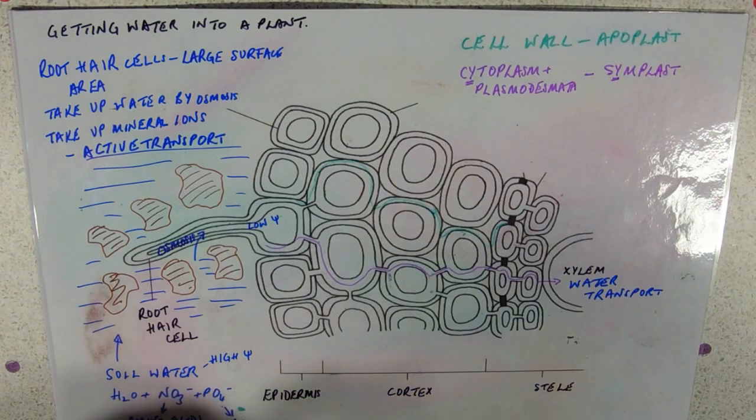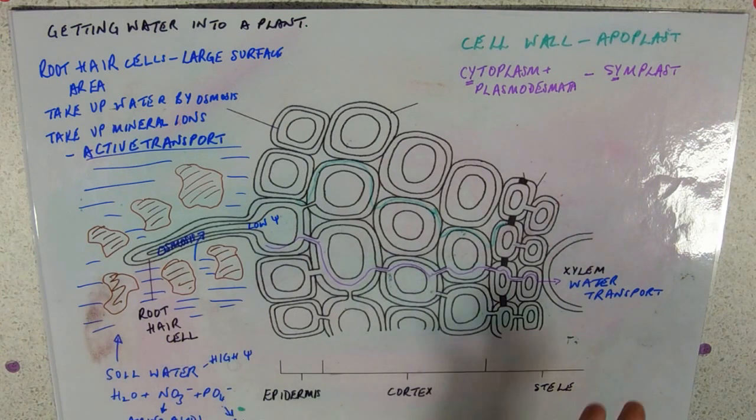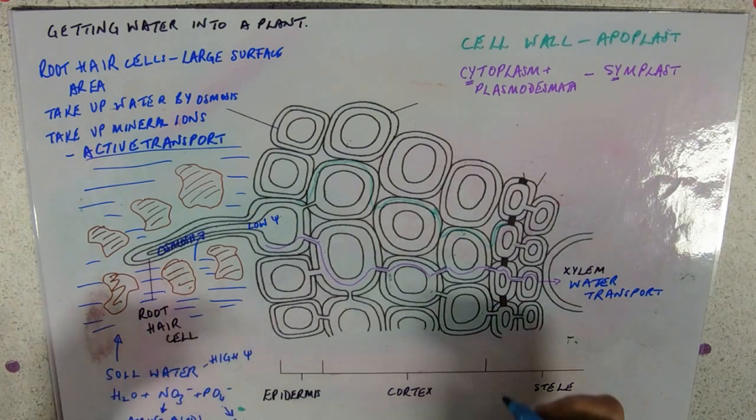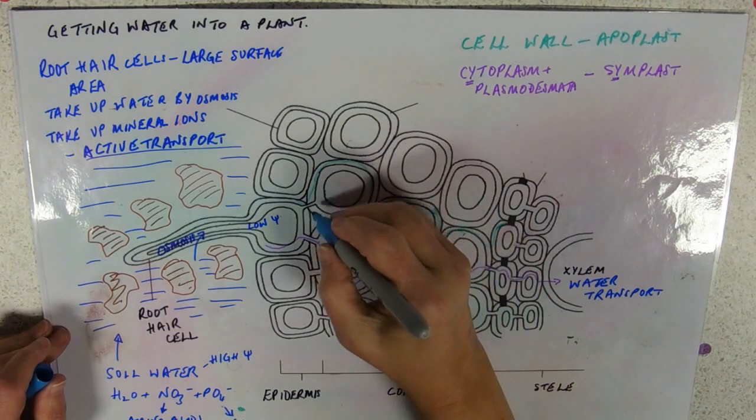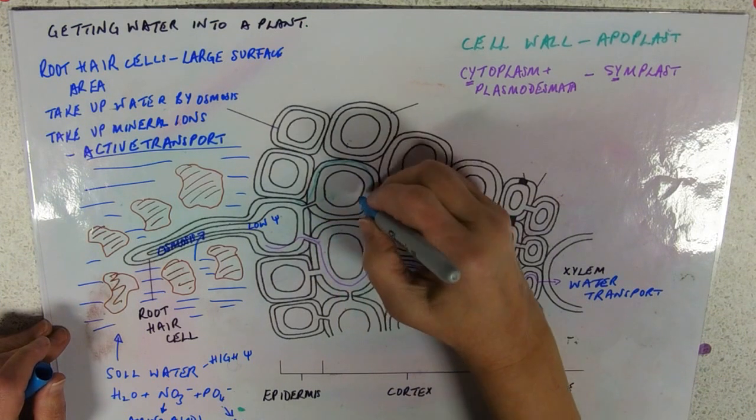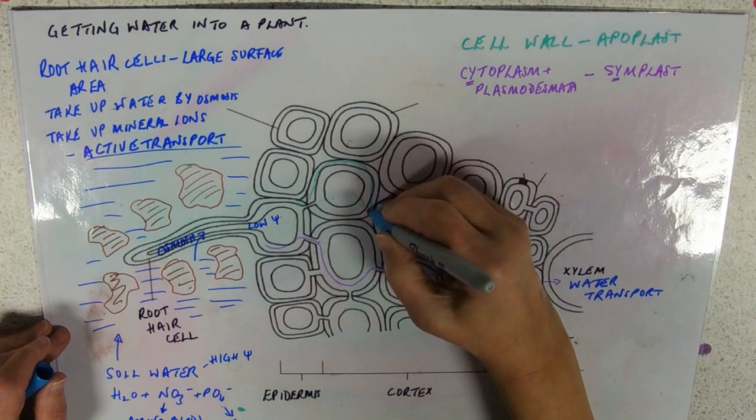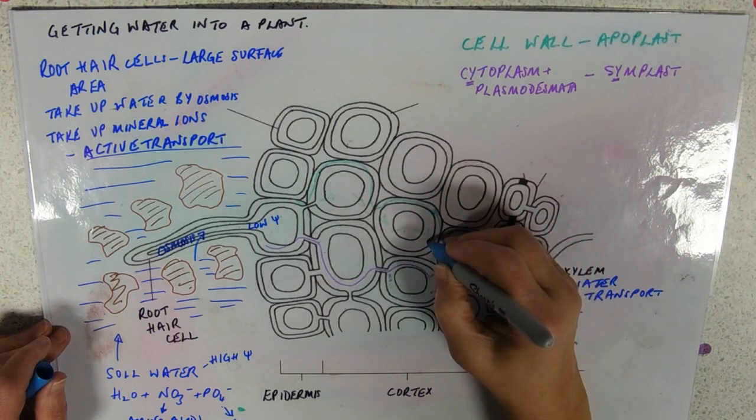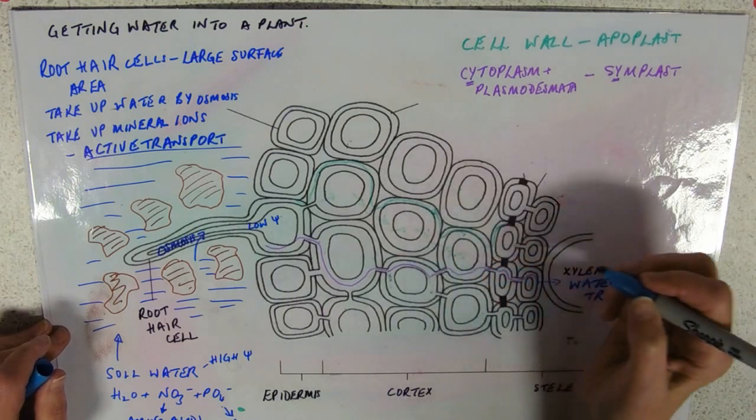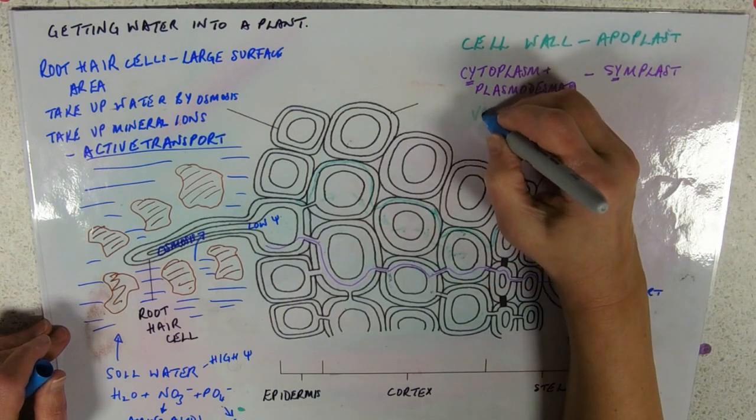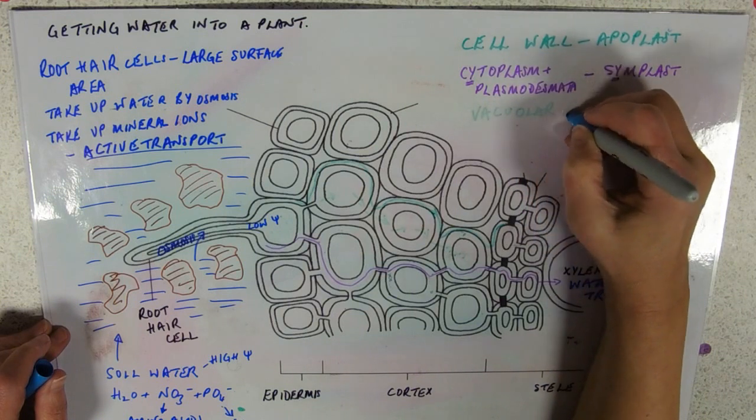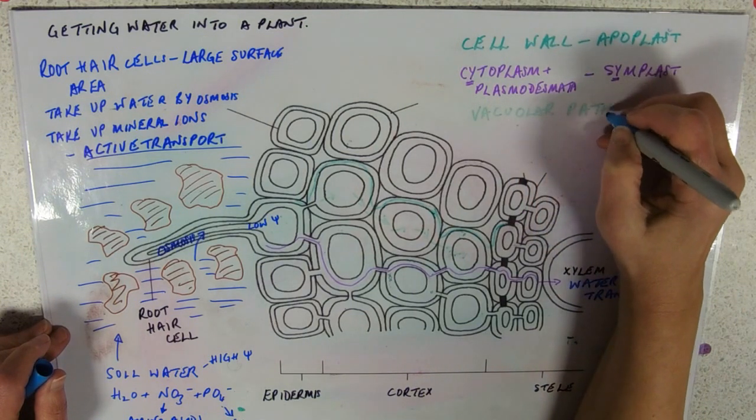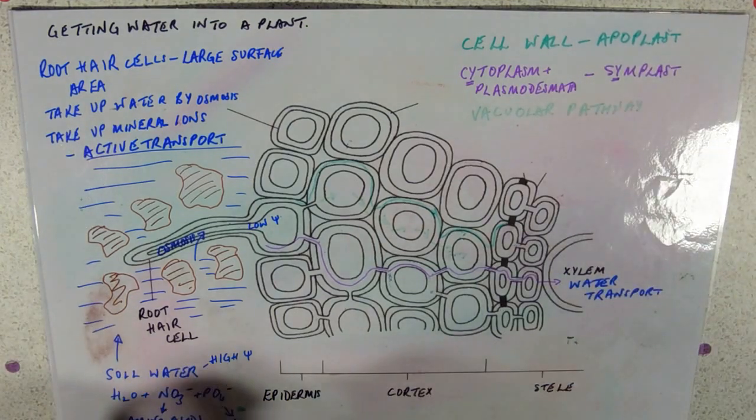Now obviously, if you've got a lower water potential somewhere, water will move by osmosis. So there's also the idea that it could go from cytoplasm into the vacuole and out of the vacuole and into the cytoplasm and into the vacuole. And that would be called the vacuolar pathway. It kind of does what it says on the tin. I'm just doing it a bit pale because it's not a very desperately important one.